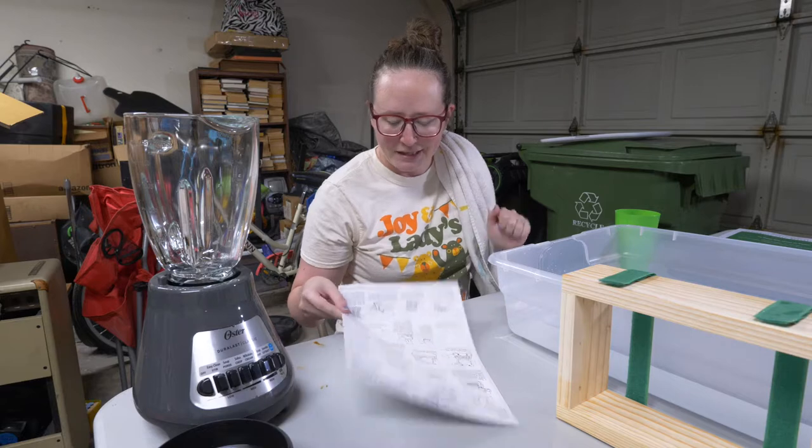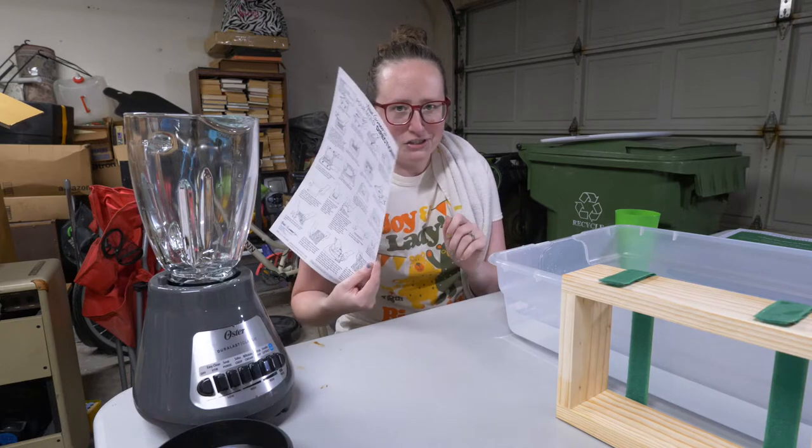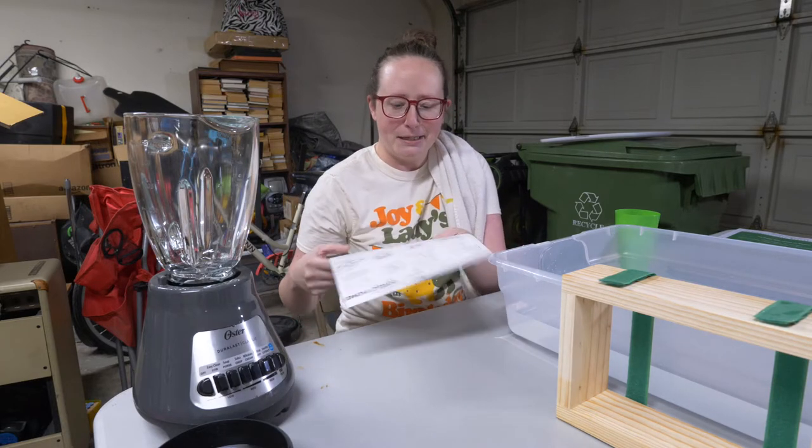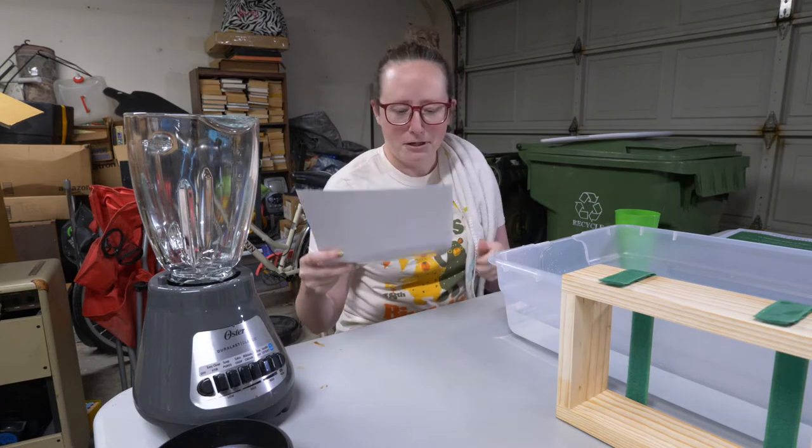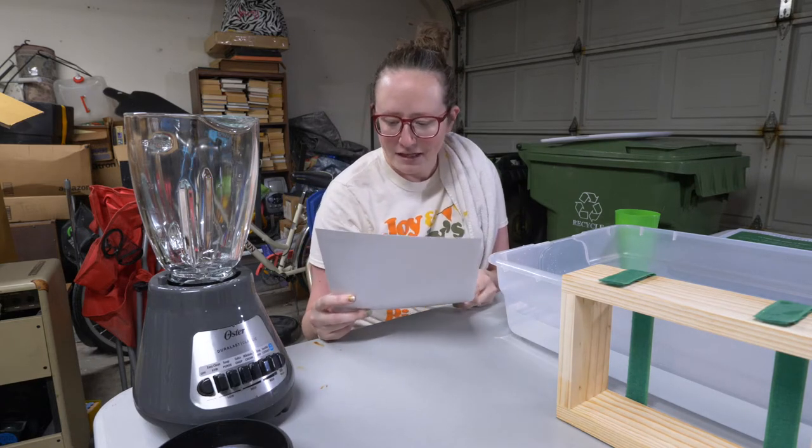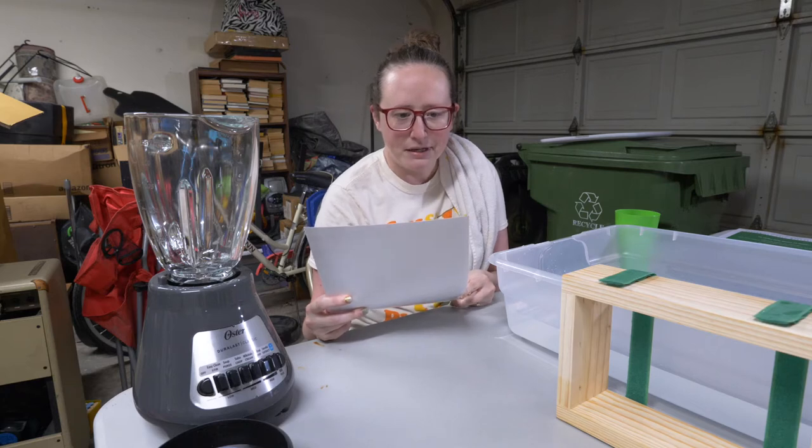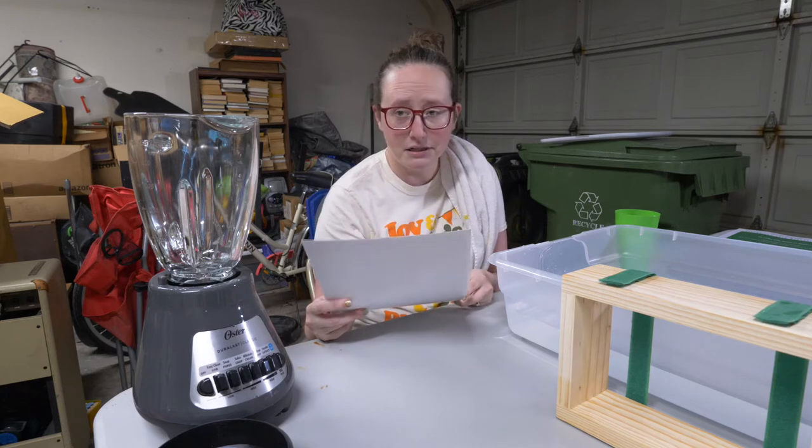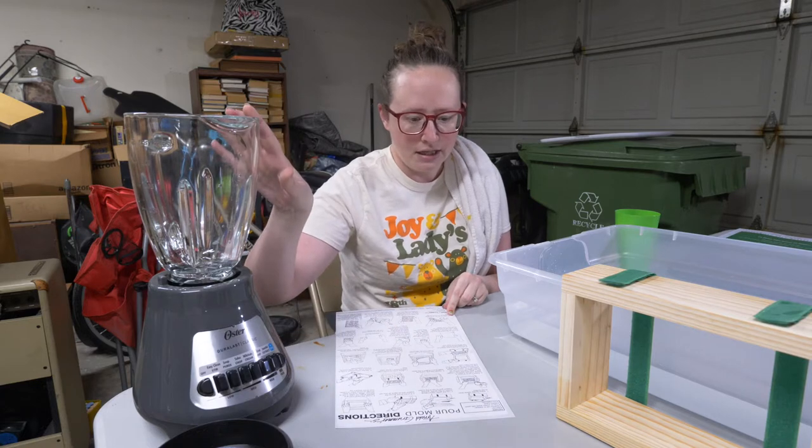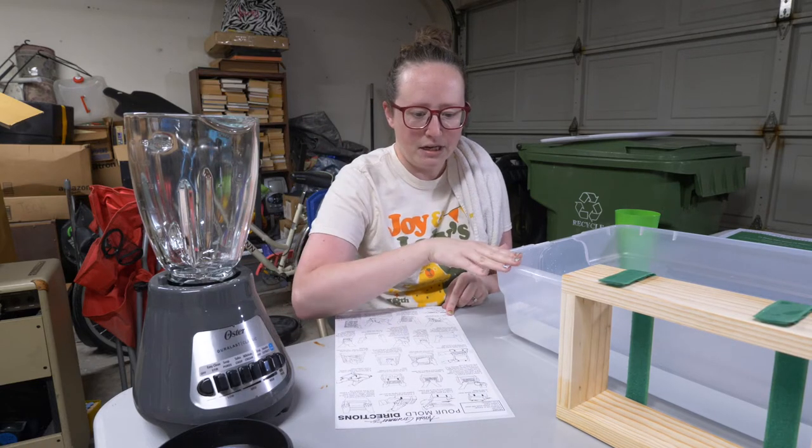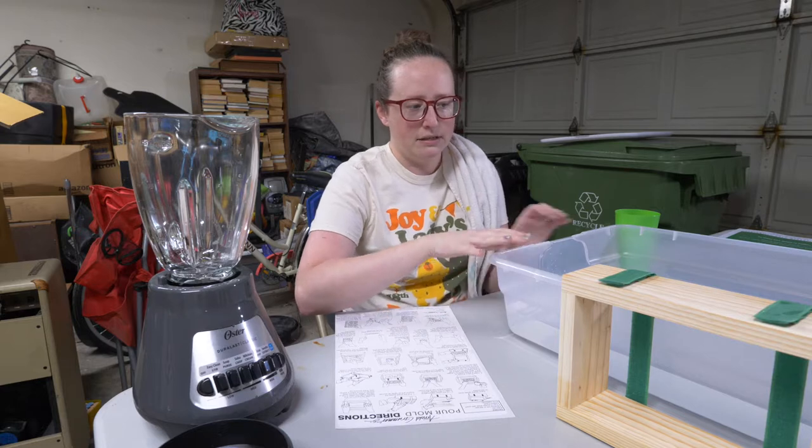I've been going over the instruction sheet here, which is a nice laminated sheet. That's great because I've already dropped it in this water just reading through it. The first step is to gather the materials that aren't included in the kit and set the blender and a shallow tub or dish pan.